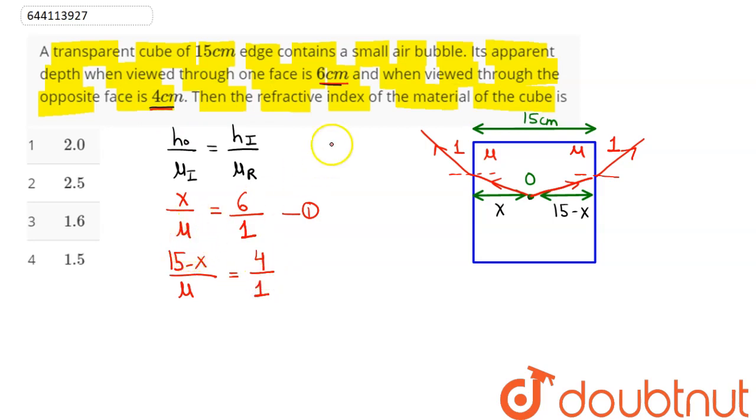So we need to find the value of refractive index of material of the cube, that is mu. Value of x from the first equation is 6 mu, and here we can say this comes as 15 minus x equal to 4 mu.